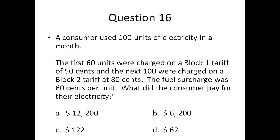Question sixteen: a consumer uses 100 units of electricity in a month. The first 60 units were charged at a block rate of 50 cents, and the next 40 units were charged at a block rate of 80 cents. The fuel surcharge was 60 cents per unit. What did the consumer pay for the electricity? A) $12,200; B) $6,200; C) $122; or D) $62.